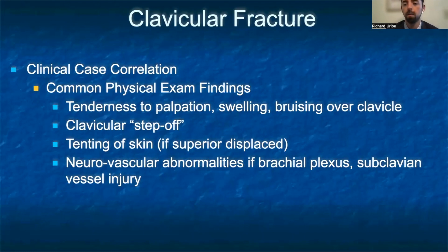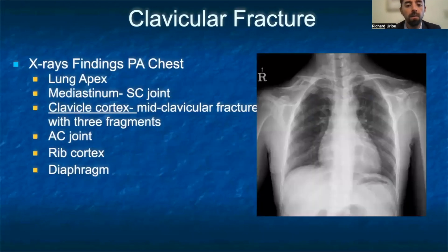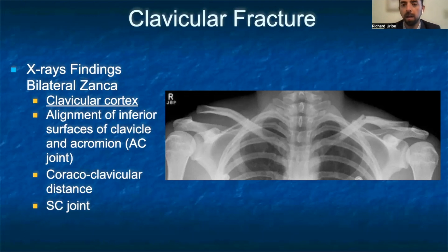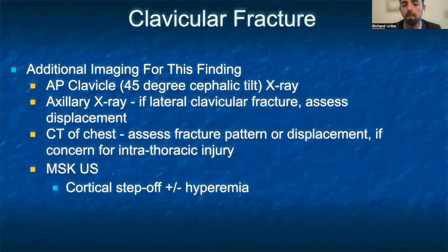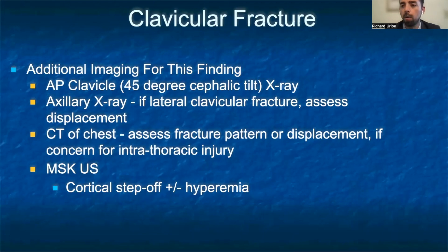If there is brachial plexus or subclavian injury, the patient may also have neurovascular abnormalities, including numbness, tingling, and skin changes. A clavicular fracture can often be noted on the PA view of the chest. On the x-ray to the right, we can see the right clavicle shows a mid-clavicular fracture with three fragments. The bilateral Zanca view may also be helpful, showing a displaced fracture of the left clavicle as well as an acromioclavicular sprain on the right. Additional imaging includes an AP 45-degree cephalic tilt film focused on the clavicle, an axillary view for lateral clavicular fractures with displacement, and CT of the chest if there is concern for intrathoracic injury. Musculoskeletal ultrasound is also useful to assess for any cortical step-off and hyperemia.